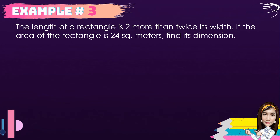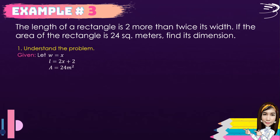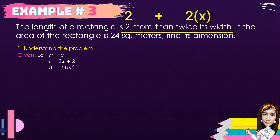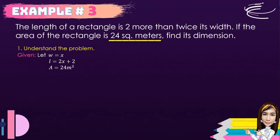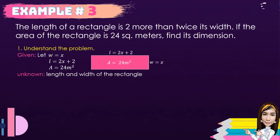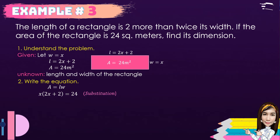Moving on to problem number three: the length of a rectangle is 2 more than twice its width. If the area is 24 square meters, find its dimensions. We let the width w = x and the length l = 2x + 2. The area A = 24 m². For the second step, the area of a rectangle is length times width, so we substitute: (2x + 2)(x) = 24.